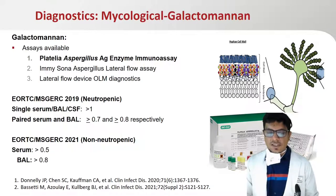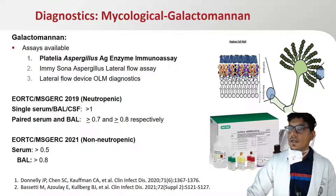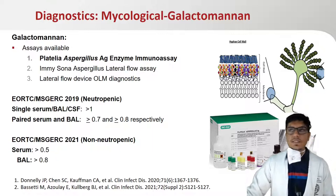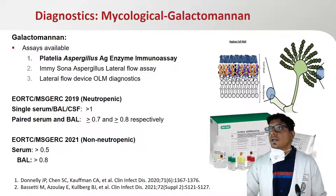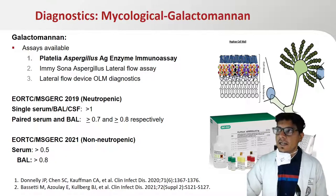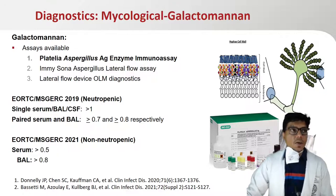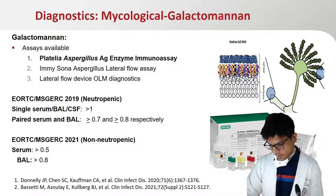Coming to diagnostics — starting with Galactomannan. A variety of assays are available but the largest evidence is with the Platelia enzyme immunoassay. The cutoff varies with the underlying immune status. Since neutrophils are natural scavengers of Galactomannan, neutropenic patients tend to have higher levels. Per EORTC 2019, a single serum or BAL sample greater than 1.0, or a paired serum and BAL sample greater than 0.7 or 0.8 respectively. For non-neutropenic patients, the cutoffs are 0.5 and 0.8.